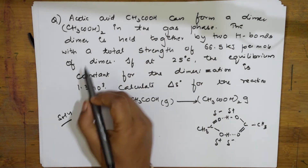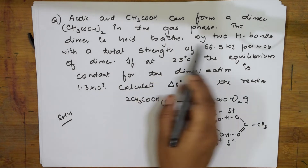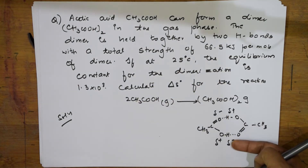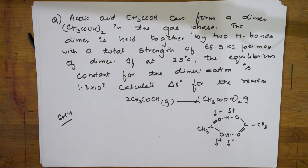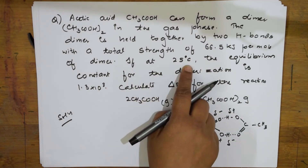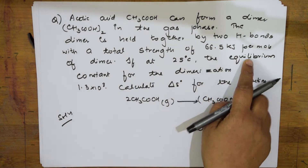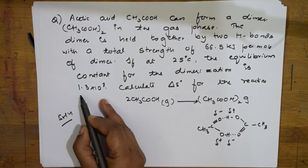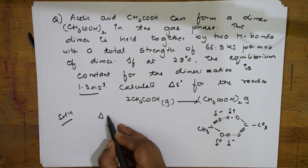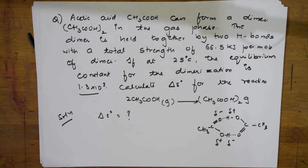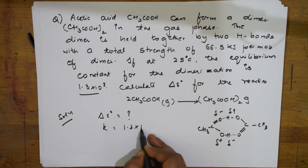In the gas phase, the dimer is held together by two hydrogen bonds with a total strength of 66.5 kJ per mole of the dimer. At 25°C, the equilibrium constant for the dimerization is given to us as K = 1.3 × 10³. What I need to calculate is delta S naught — the standard entropy change for this reaction.